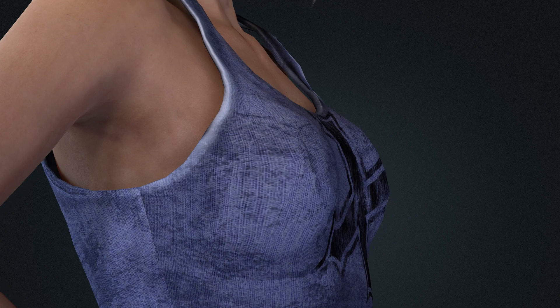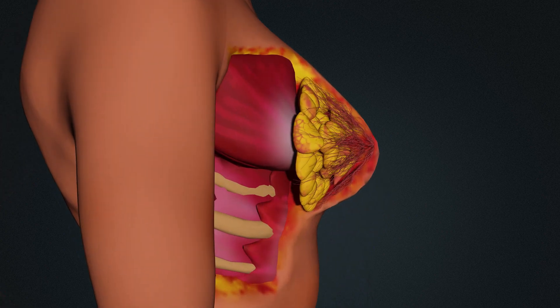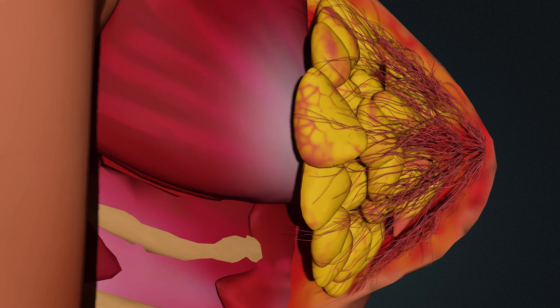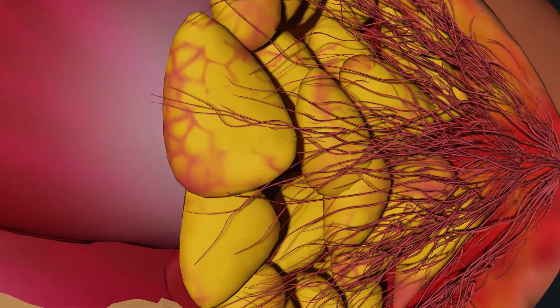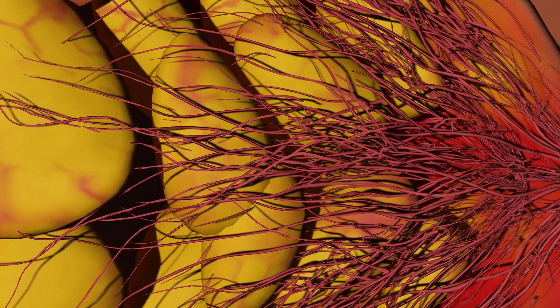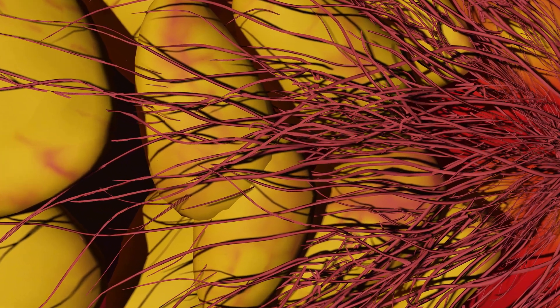Internally, they house vital structures, which we'll explore next. Inside the breast, lobules are responsible for producing milk, which flows through a network of lactiferous ducts to the nipple. These structures are supported by connective tissue and fat, giving the breast its shape and functionality.